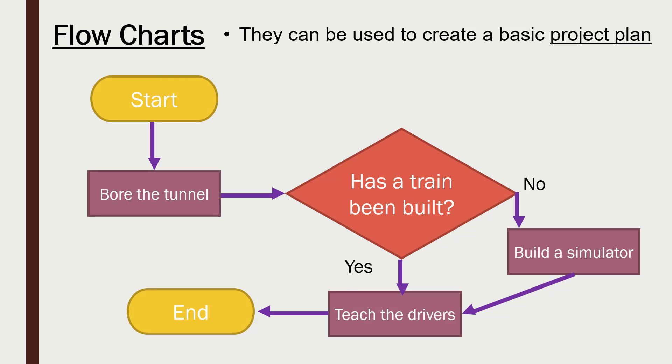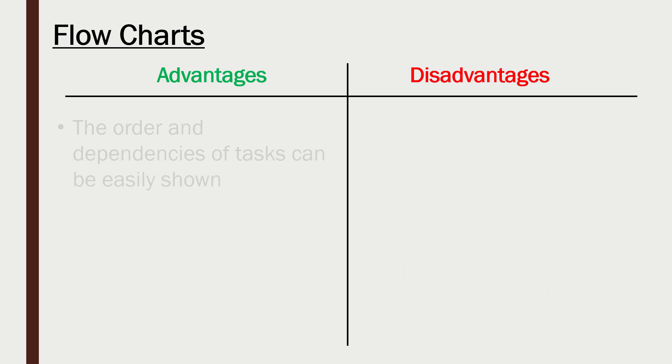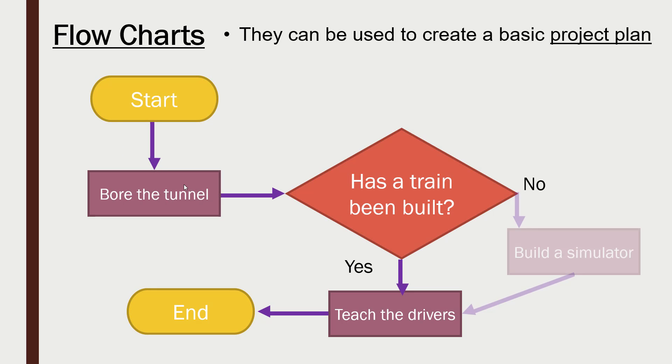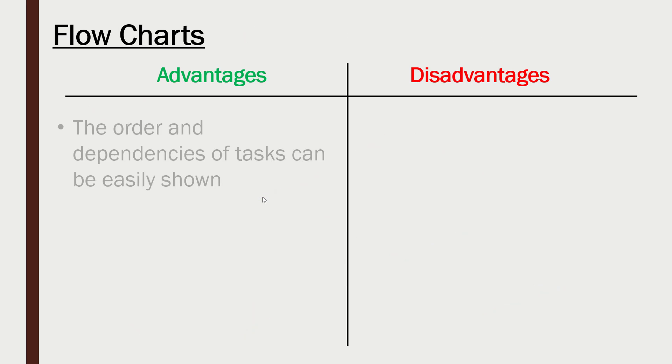OK, so let's evaluate flowcharts. In terms of advantages, it's really useful to be able to see the order and the dependencies so clearly. We've got the arrows, we can see exactly which tasks need another task done first. The order is really obvious to us.